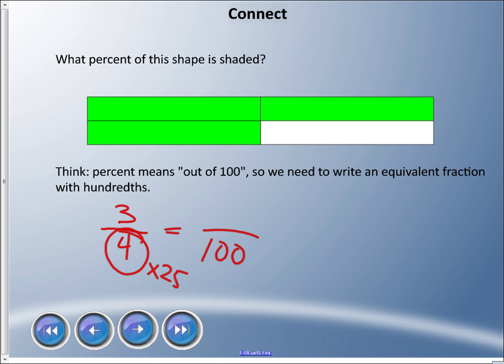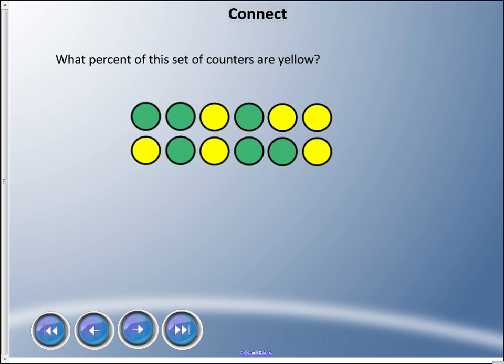With fractions, whatever you do to the denominator you must do to the numerator or vice versa. So three times 25—think money here, three quarters is 75 cents—so 75. Now we can do something with this: 75 out of 100 is 75%, so 75% of this shape is shaded.